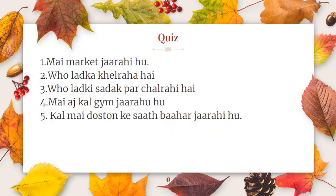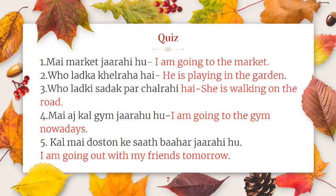Now try to translate these sentences using present continuous tense: 'Main market ja rahi hoon' — I am going to the market. 'Woh ladka khel raha hai' — He is playing in the garden. 'Woh ladki sadak par chal rahi hai' — She is walking on the road. 'Main aajkal gym ja raha hoon' — I am going to the gym nowadays. 'Kal main doston ke saath bahar ja rahi hoon' — I am going out with my friends tomorrow.